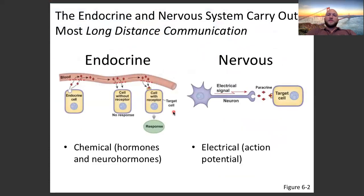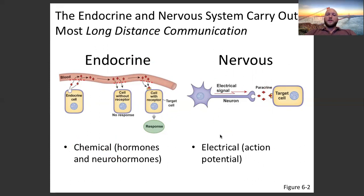The endocrine and nervous system carry out most long-distance communication. When you need to coordinate with cells that are far away, these are your two methods. The endocrine system uses chemical signaling — hormones and neurohormones. The nervous system uses electrical signals, or action potentials; nerves are famous for sending that electrical signal down the axon.